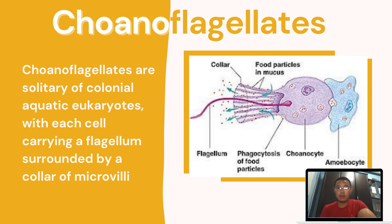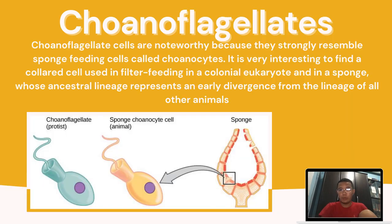We will now be talking about choanoflagellates. Choanoflagellates are solitary or colonial aquatic eukaryotes with each cell carrying a flagellum surrounded by a collar of microvilli. Choanoflagellate cells are noteworthy because they strongly resemble sponge-feeding cells called choanocytes. It is very interesting to find a collared cell used in filter-feeding in a colonial eukaryote and in a sponge, whose ancestral lineage represents an early divergence from the lineage of all other animals.